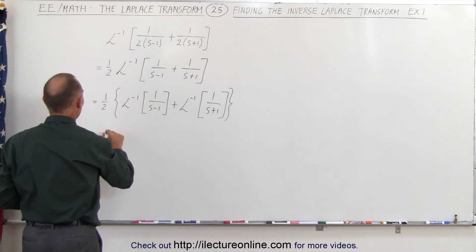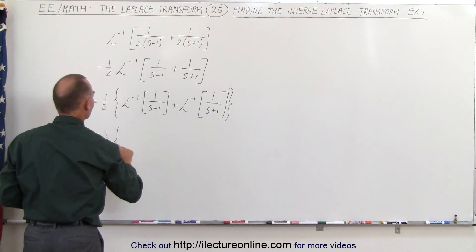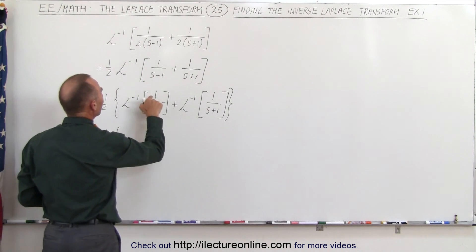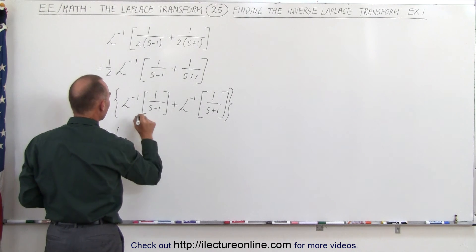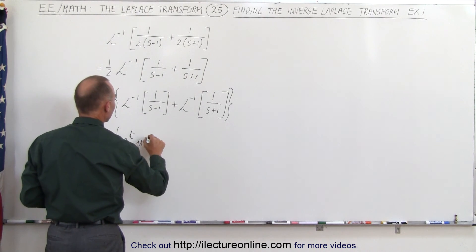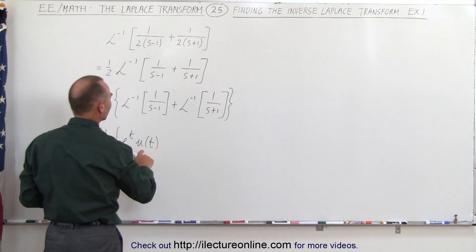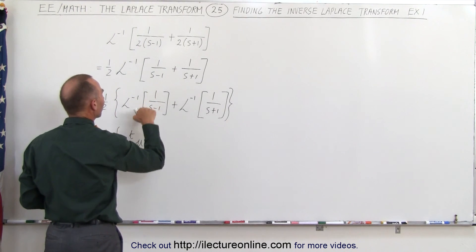So this becomes 1 half times the Laplace transform of this would be equal to e to the plus t times the step function u of t which is the inverse Laplace transform of 1 over s.